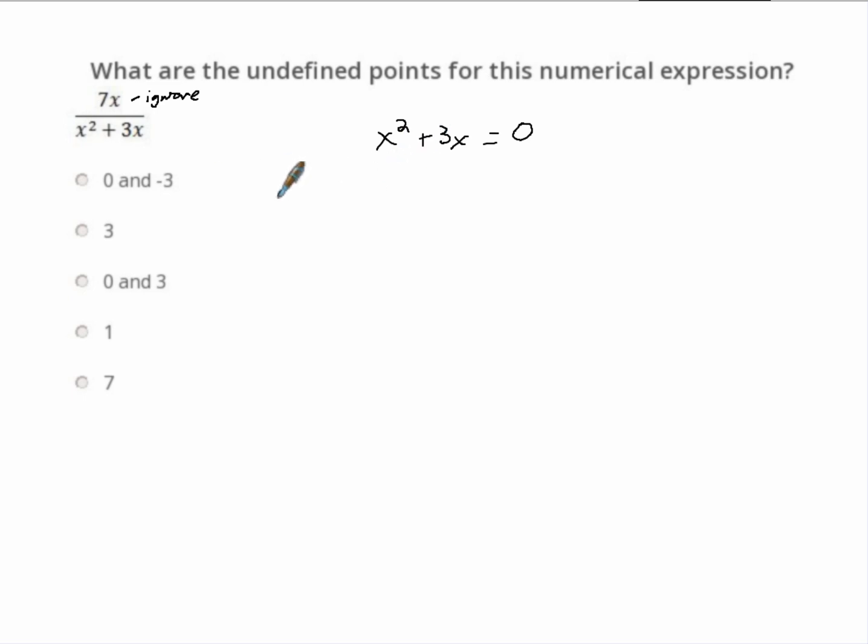If we put in 0 here, if we put in a 0, 0 squared plus 3 times 0, does that equal 0? Well, 0 times itself or 0 is 0 and 3 times 0 is 0. So yes, 0 works.